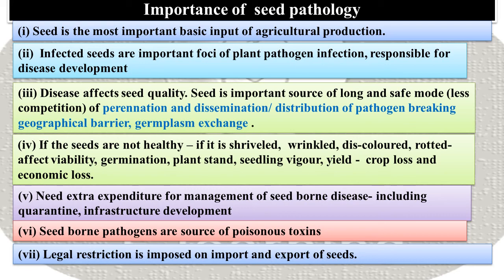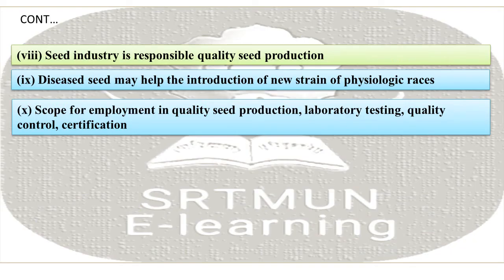Legal restrictions are imposed on the import and export of seeds. The seed industry is responsible for quality seed production. Diseased seeds may help the introduction of new strains or physiological races. There is also scope for employment in quality seed production, laboratory testing, quality control, and certification.